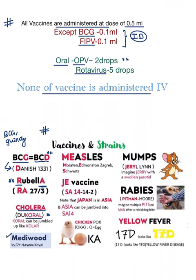Measles has three strains — this is a most frequently repeated PYQ. M stands for Moraten, E stands for Edmonston-Zagreb, and S stands for Schwarz strain. For Japanese encephalitis, there are three strains; the one most commonly asked is SA 14-14-2, and there are also the Nagayama strain and the Beijing strain.